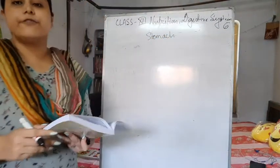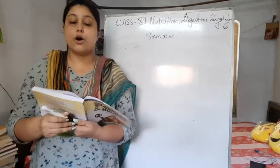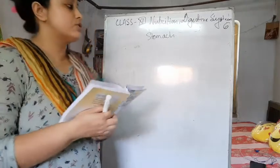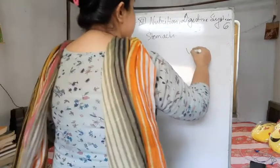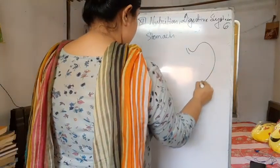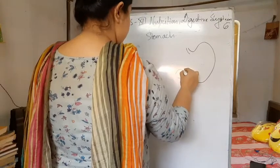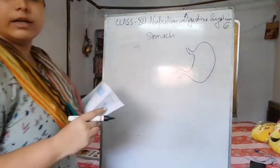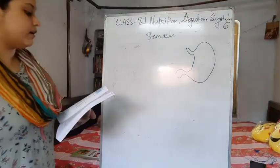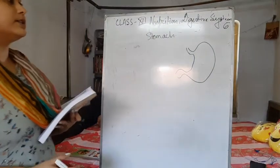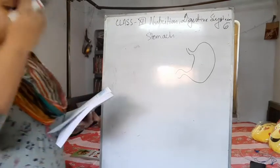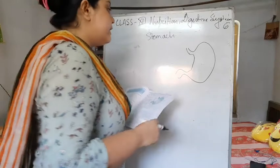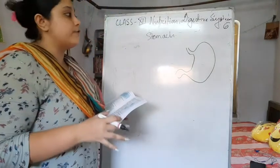The stomach is a very important part of the digestive tract. It has a J-like structure. This part of the tract comes after the esophagus and continues till the small intestine. There are many parts of the stomach.